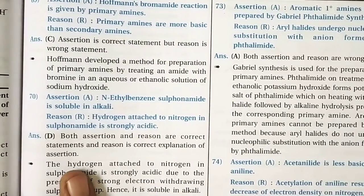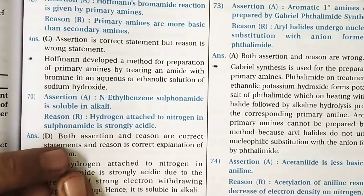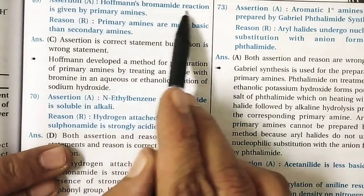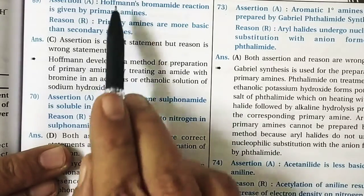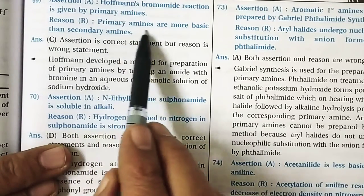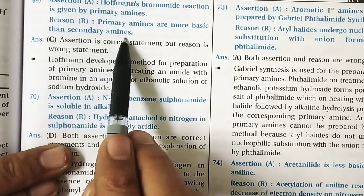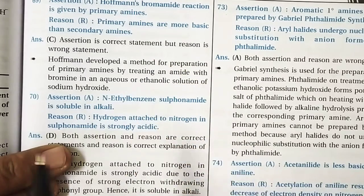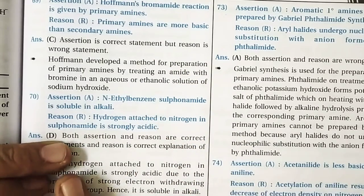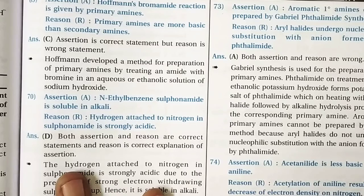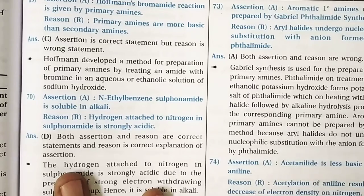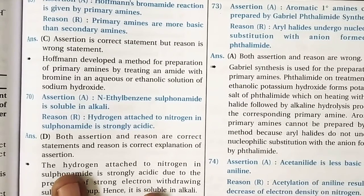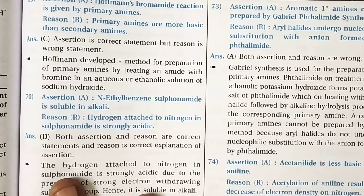Question 69: The assertion is that Hoffmann bromamide reaction is given by primary amides — this is correct. The reason given (primary amines are more basic than secondary) is wrong. The correct reason is that bromine and NaOH convert primary amides into isocyanates, which upon alkaline hydrolysis give primary amines with one less carbon.